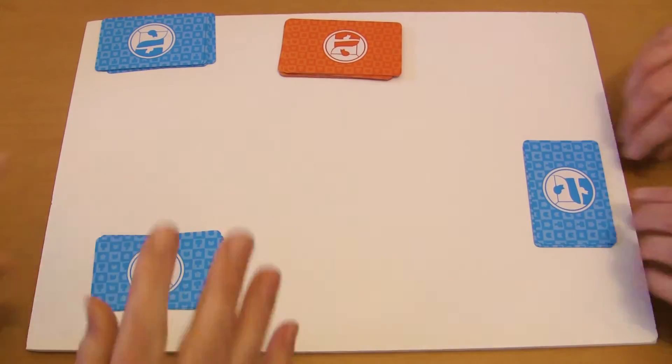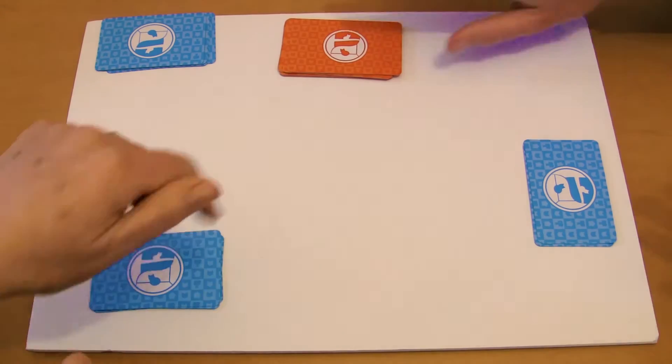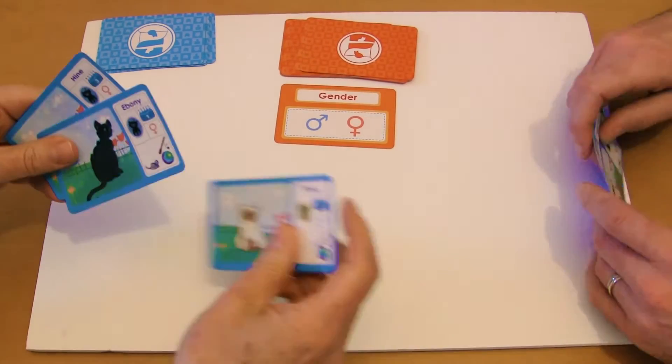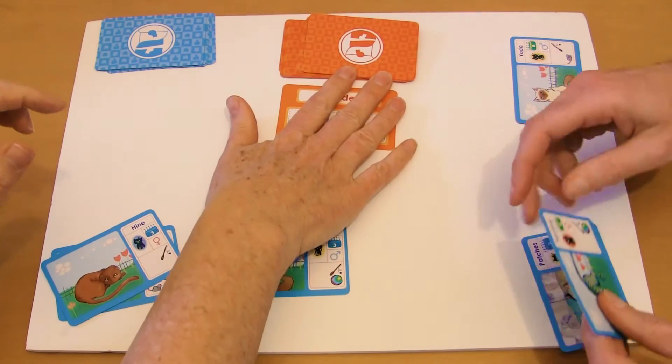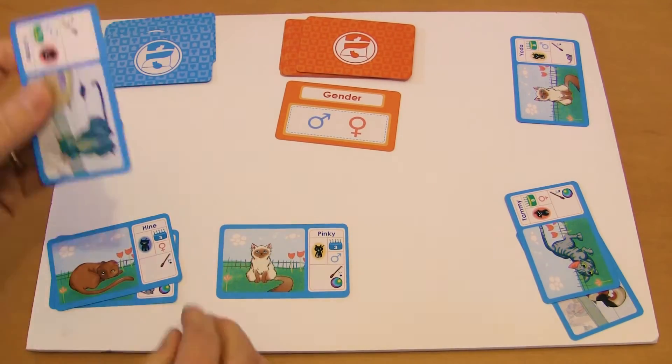We put our cats down in front of us, lift our hands off, and he turns over the orange card. It says gender, so we quickly sort them by male and female. I got there fastest, so I get another cat.